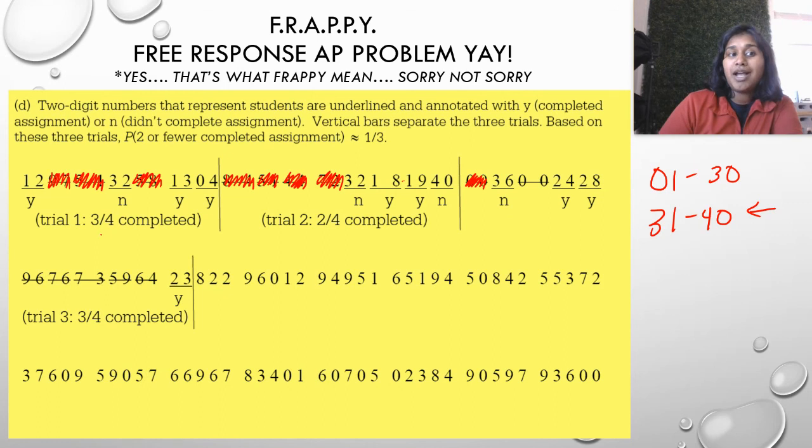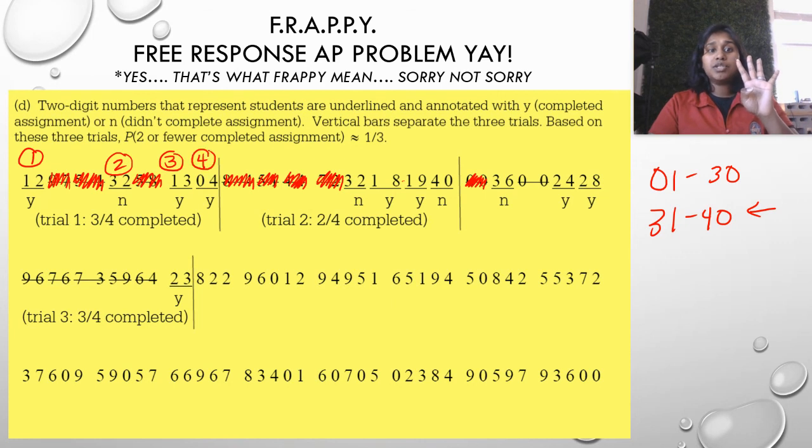How do I know I've completed a trial? Well, remember, we're selecting four students. So here's student one, two, three, four. So we put a giant vertical bar to separate the trial. Student one, two, three, vertical bar. Student one, two, three, vertical bar. So there's my completed. I don't need the rest of this because the question didn't ask me for the rest of that.